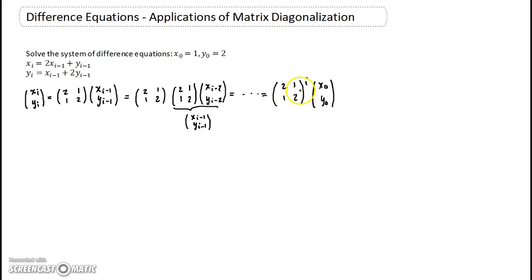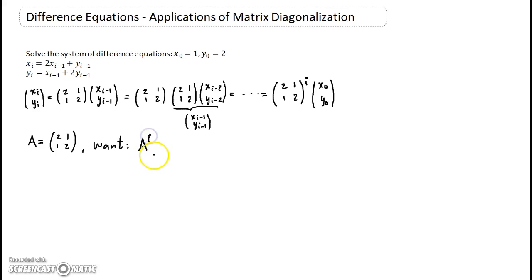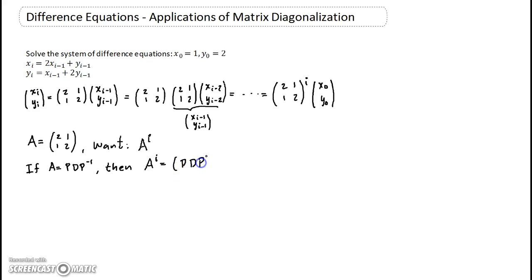So it would suffice to find a nice expression for this matrix. If we let A be the matrix [2,1;1,2], what we want is an expression for the matrix Aⁱ. To do this, we're going to use diagonalization of the matrix — because if I could diagonalize A by writing A = PDP⁻¹, then when I calculate the iᵗʰ power of A, I'm going to have PDP⁻¹ multiplied i times.